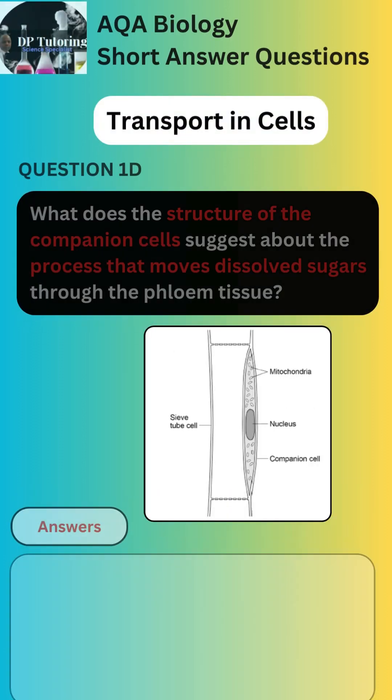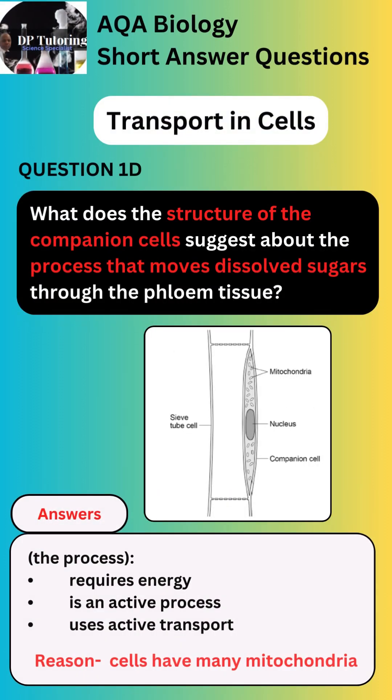You can choose one from these options for the process: 1. Requires energy. 2. Is an active process. 3. Uses active transport. If you look at the diagram and mitochondria are labelled, then you need to focus on that. Reason: the cells have many mitochondria.